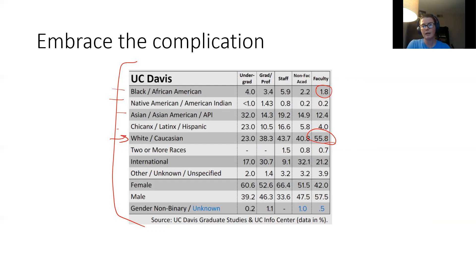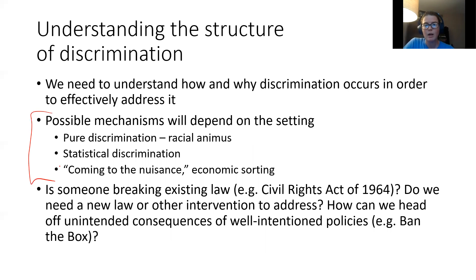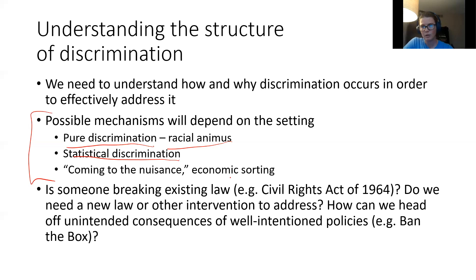For the rest of this lecture, we're going to talk about the structure of discrimination in a couple of different settings, and we really want to understand the mechanisms for how discrimination is occurring. That includes understanding possible mechanisms like pure discrimination — just people having preferences for people in their own racial or ethnic group — but also other mechanisms like statistical discrimination and economic sorting. It's really important to understand those mechanisms because if we don't know how or why discrimination is occurring, it's hard to structure policies that address its specific source.